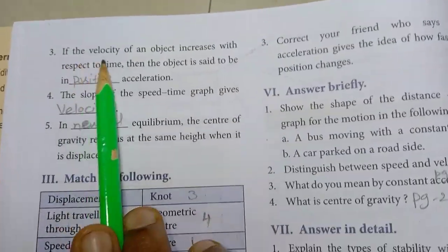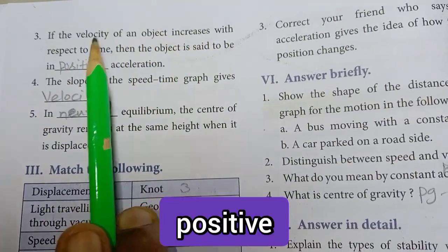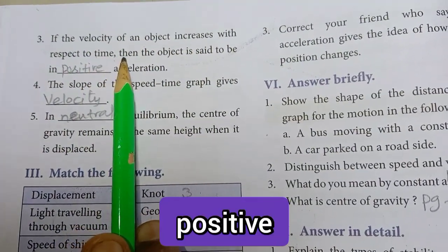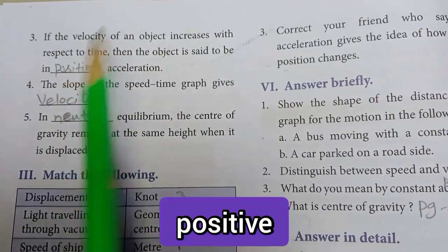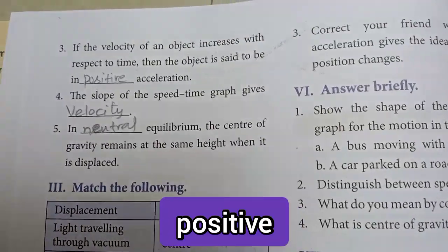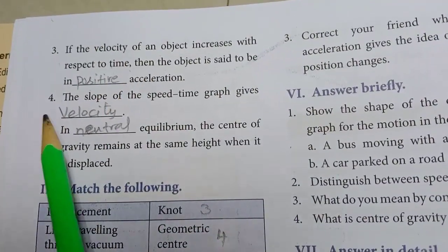3rd one — if the velocity of an object increases with respect to time, then the object is said to be in positive acceleration. Answer: positive.